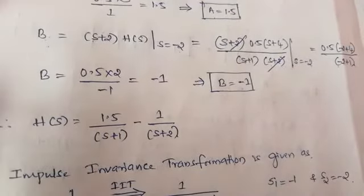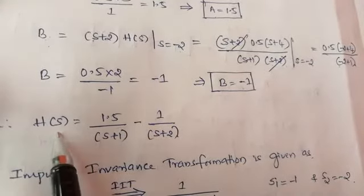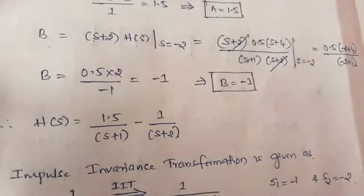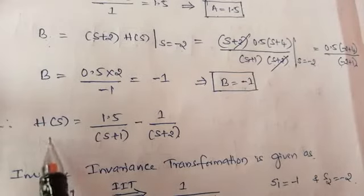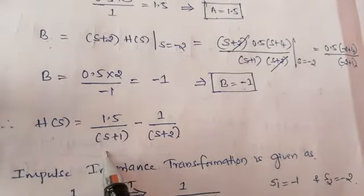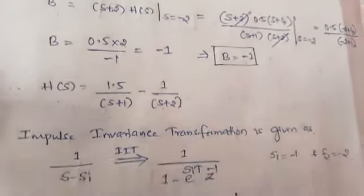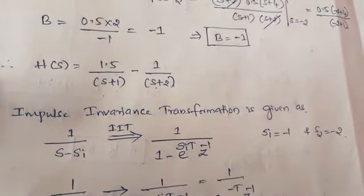Now substituting the values of A and B, the transfer function of the analog filter is H(S) equal to 1.5 divided by (S plus 1) minus 1 divided by (S plus 2).